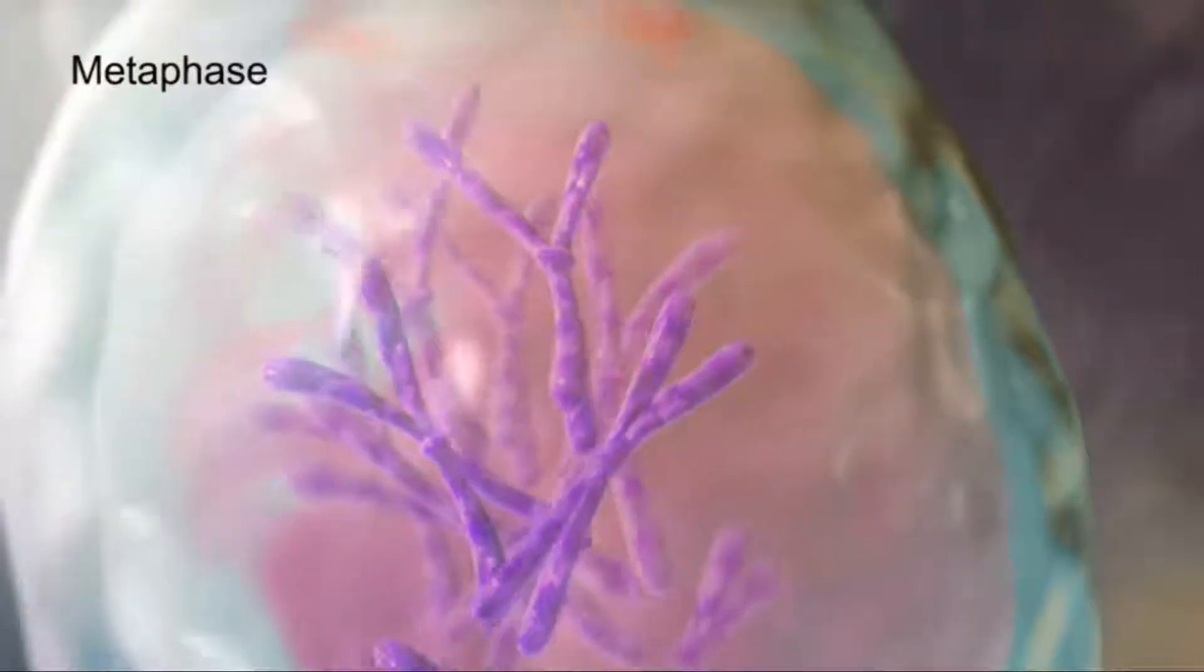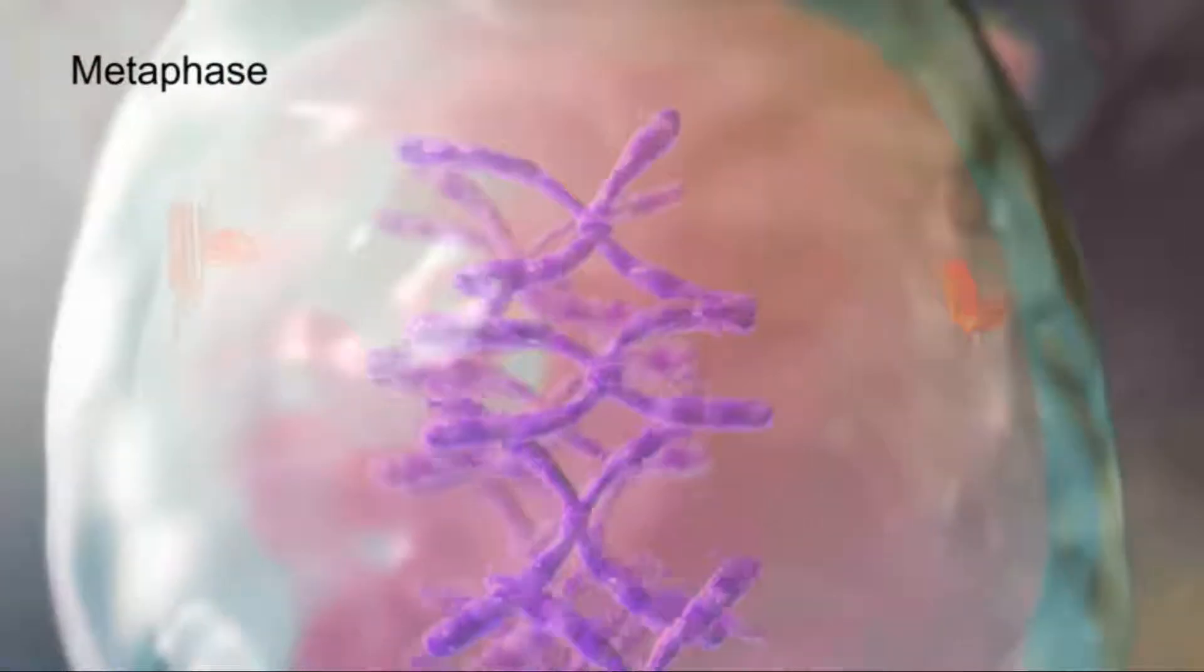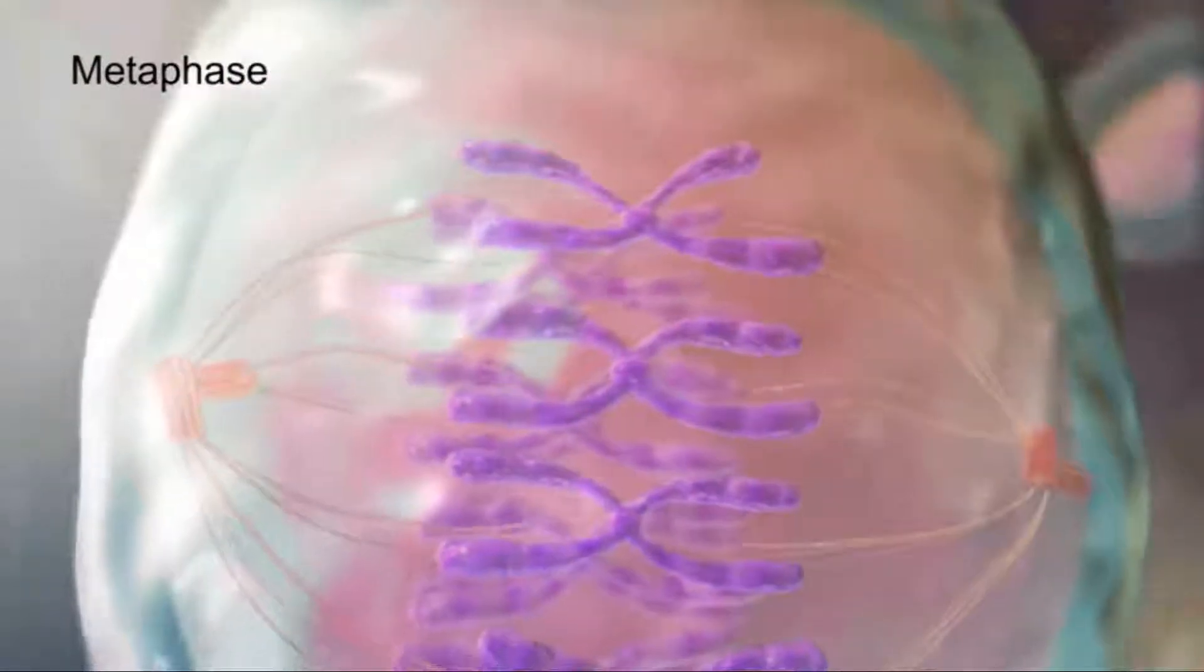In the next steps, spindle fiber is attached to the centromeres, and the chromatids line up along the cell's midline.